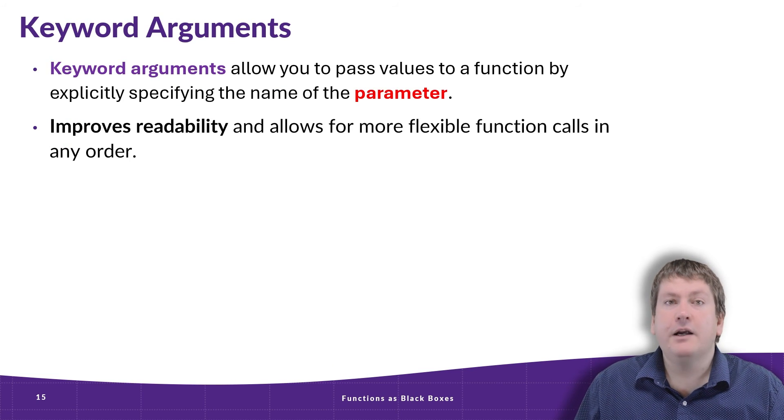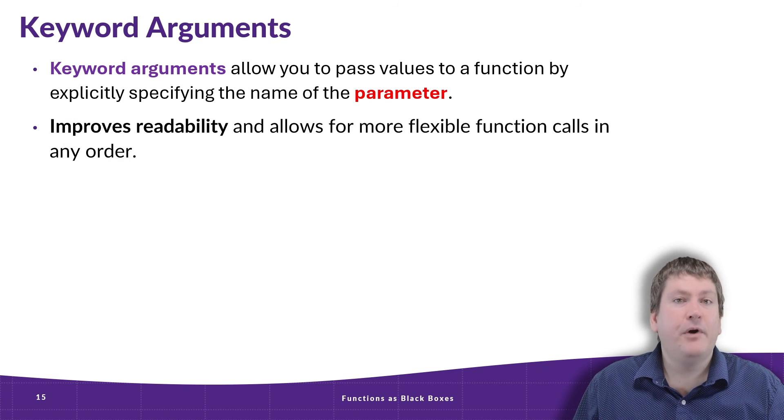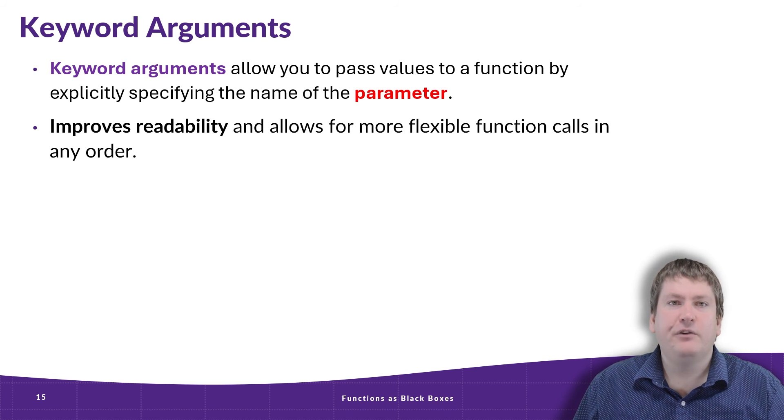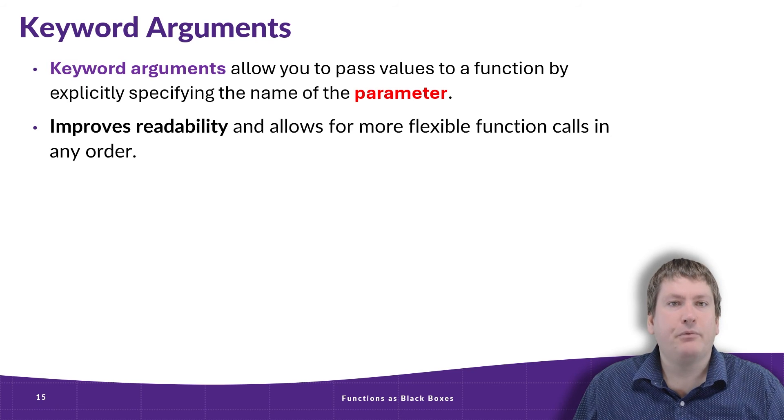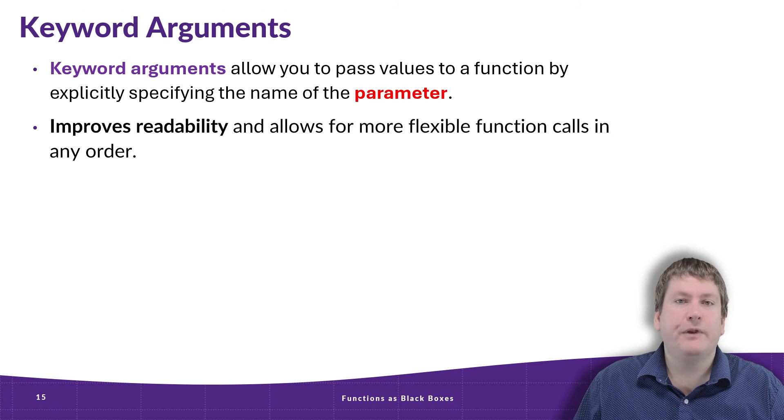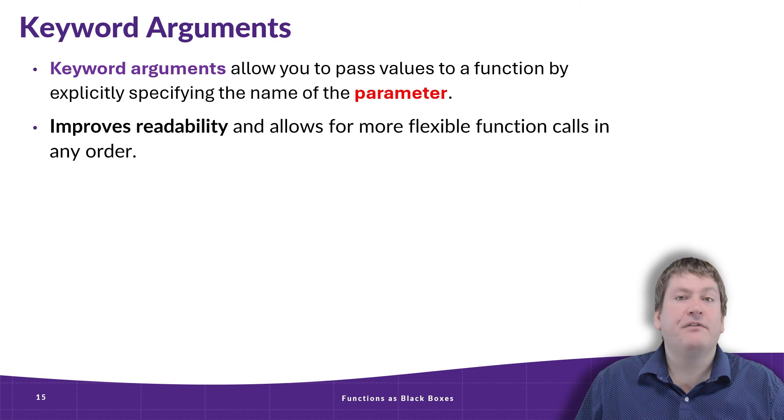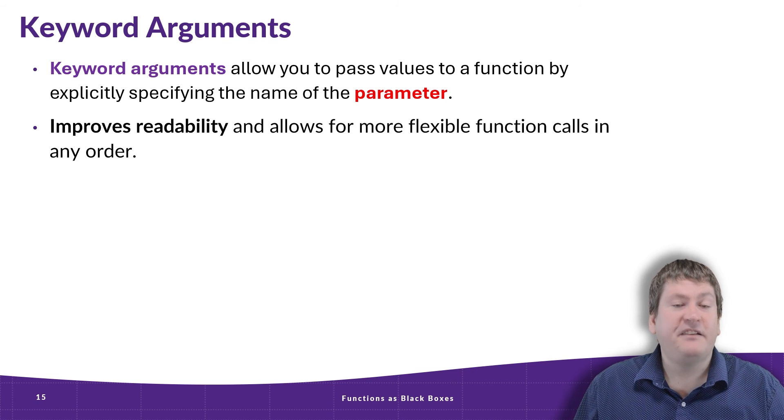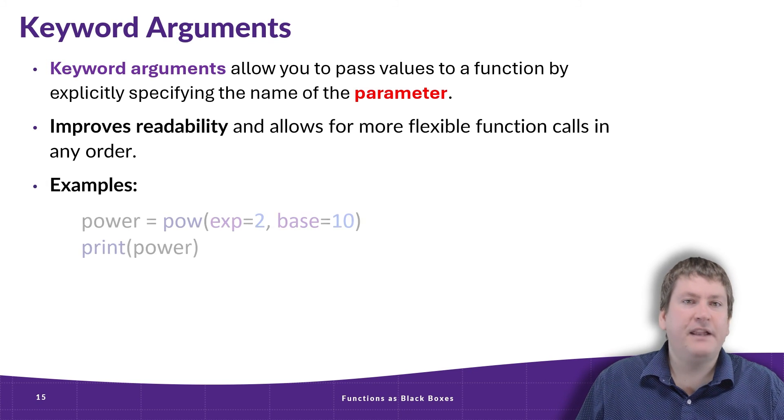The next thing we're going to talk about are keyword arguments. And we've already seen some of these, especially with print, but they allow us to pass values to a function by explicitly stating the name of the parameter that this is an argument for. And this really improves readability, but it also gives us more flexibility in our function calls because we can specify the arguments in any order. Let's take a look at an example.